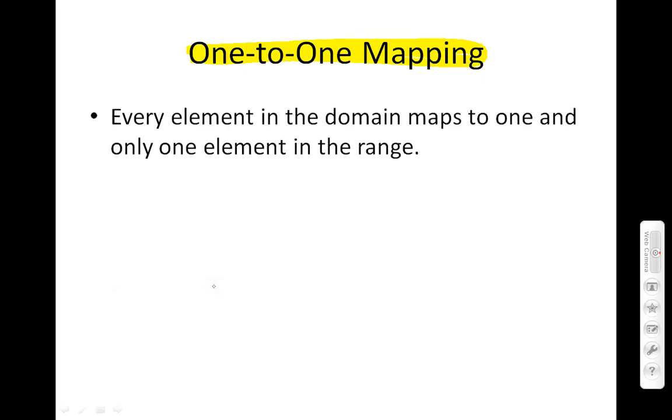One special mapping is called a one-to-one mapping. A one-to-one mapping is when every member in the domain maps to one and only one element in the range.